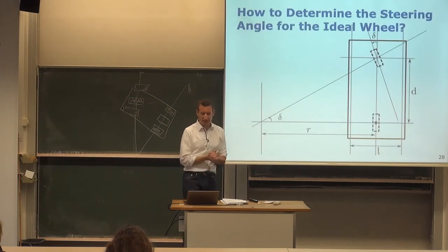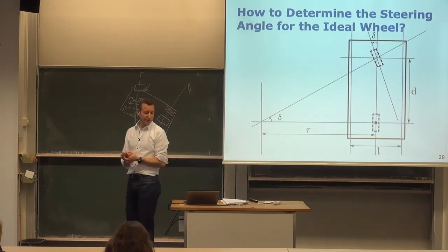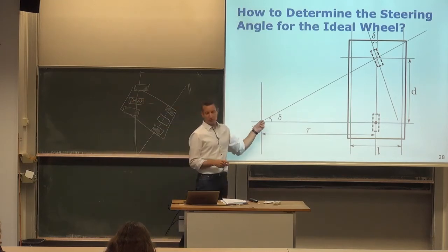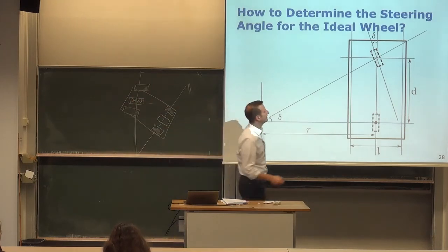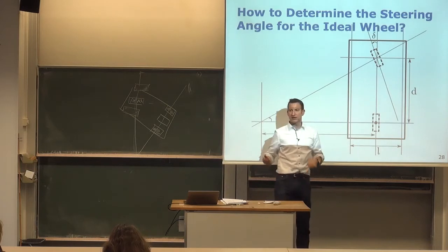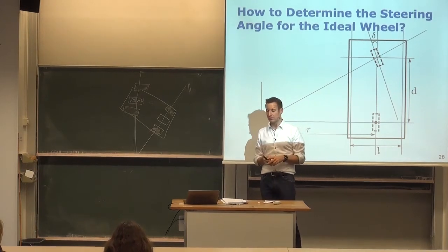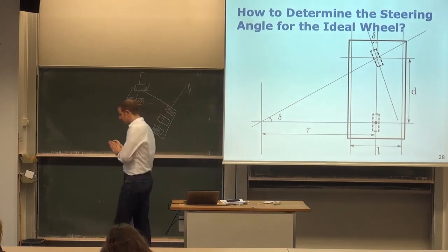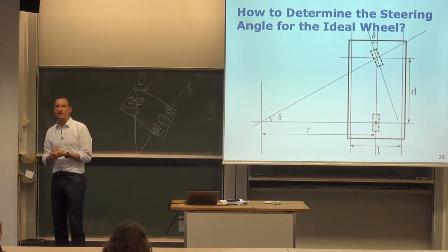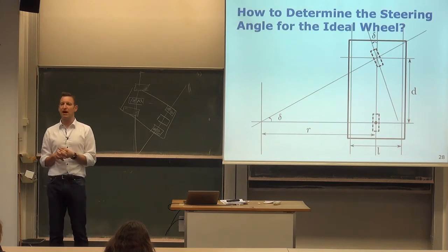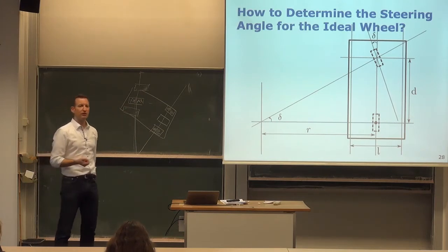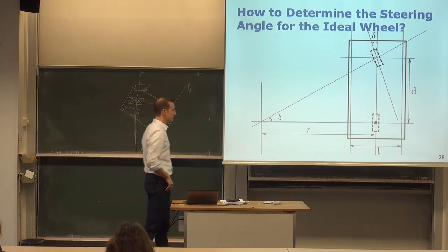Let's derive the relationship mathematically. We want to rotate around a point with a steering angle δ on the ideal wheel. Using basic trigonometry, we know the ICC must lie on the line of the rear axis. We can map the steering angle at the front wheel down to the triangle formed at the ICC, which has: the vehicle wheelbase d (distance between front and rear axes), the angle δ, and the right angle at the base.